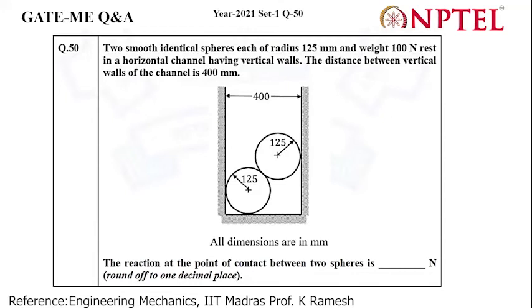Hello all. Today we are going to solve year 2021 set 1, question 50 of the GATE Mechanical Engineering paper. The question is as follows: Two smooth identical spheres, each of radius 125 mm and weight 100 Newton, rest in